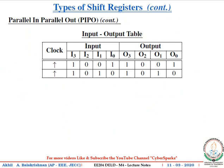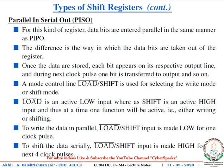Now let's look at the input-output table of a PIPO shift register. If you give the input as 1001 in the first clock pulse, the output immediately becomes 1001. If during the second clock pulse you give another input such as 1010, correspondingly the output becomes 1010. This completes the operation of a parallel in parallel out shift register.